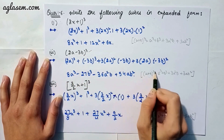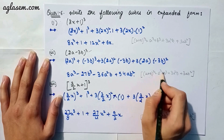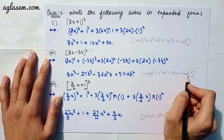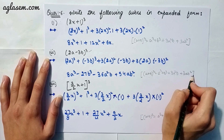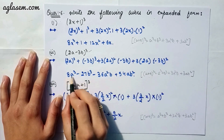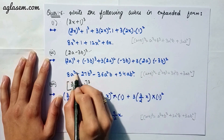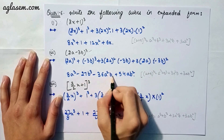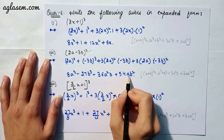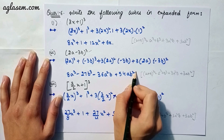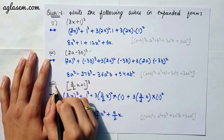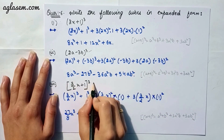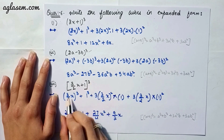Moving to our second part: (2a − 3b)³. Applying the same formula (a + b)³ = a³ + b³ + 3a²b + 3ab², the answer is 8a³ − 27b³ − 36a²b + 54ab².